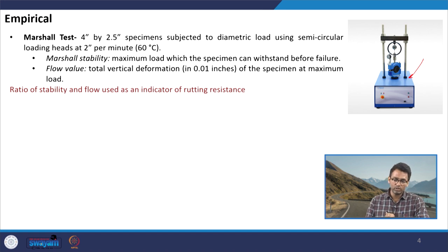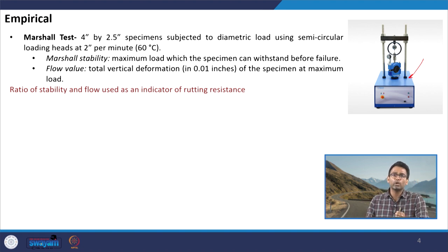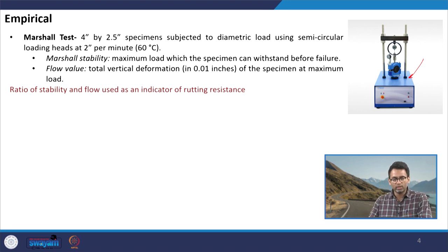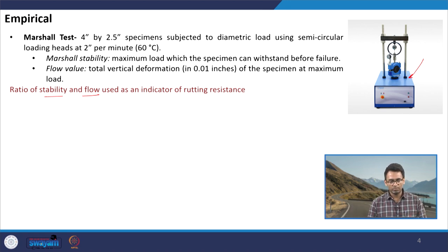As mentioned during our discussion on mix design, both Marshall stability and flow are empirical tests. They are mostly used only as check parameters in the Marshall mix design, and studies have not found good correlation with the occurrence of distress and the values of Marshall stability and flow. However, the ratio of Marshall stability to flow has been taken as an indicator of rutting resistance, though not many publications agree with this particular parameter.